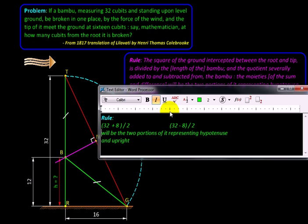What do they represent will be the two portions of it. So these are the two pieces. Over here is one piece of the bamboo, and here is the other piece of the bamboo after it breaks. And what do they represent? Representing hypotenuse. So the first piece is hypotenuse and upright.